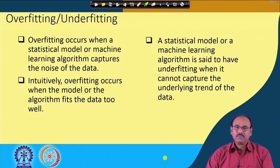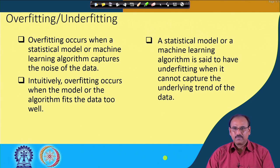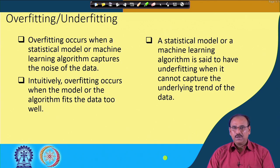The underfitting problem is just the opposite — the machine cannot even capture the underlying trend of the data or its distribution. So these are two extremes: in underfitting the machine cannot capture the distribution, whereas in overfitting even the finest minute details of the training data are captured, including noise.